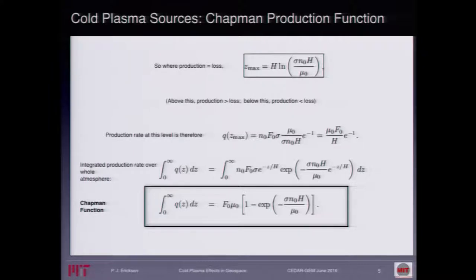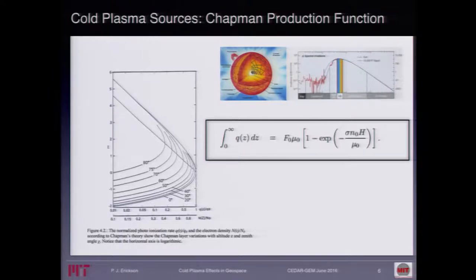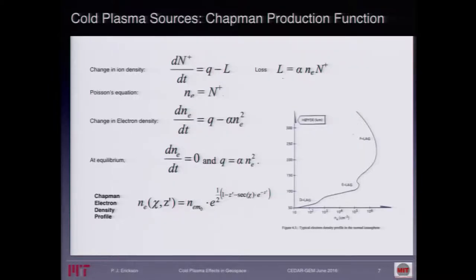If you keep going — production equals loss — you can get down to the Chapman function, which is the production function describing how the production of ionization varies as a function of altitude. If you go further, you can derive the normalized photoionization rates as a function of a scaled coordinate, essentially dimensionless altitude, with various curves for different solar zenith angles. Sidney Chapman, being an extremely accomplished mathematician, just kept going and said: production minus loss equals the change in ionization density. Using Poisson's equation and assuming electrons roughly equal ions, you get the loss rate proportional to the square of the electron density, and from that, the very classic Chapman electron density profile.